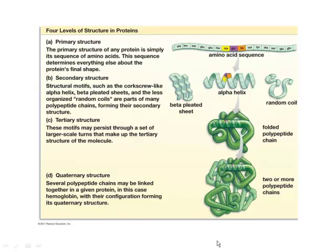We learned that shape is critical to the functioning of proteins. There are thousands upon thousands of different proteins because proteins assume thousands and thousands of different shapes. How in the world can proteins have so many different shapes? Because proteins are very complex molecules.